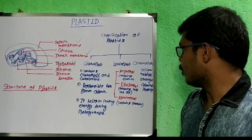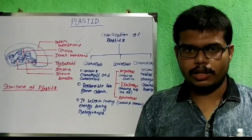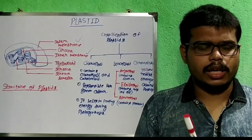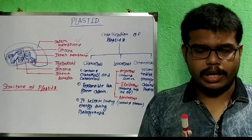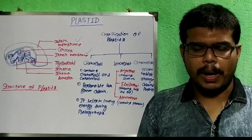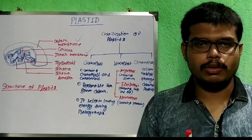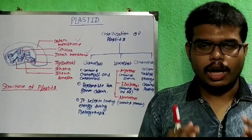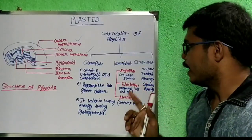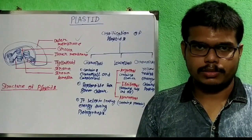Now I will discuss about chromoplast. Some plant tissues are different in color — some flowers show various colors, and some plant parts like carrot, which is a modified root, show different colors. These different types of colorful plant tissues are formed due to the presence of chromoplast. Yellow, reddish, orange, etc. — different types of colors are formed due to the presence of chromoplast.